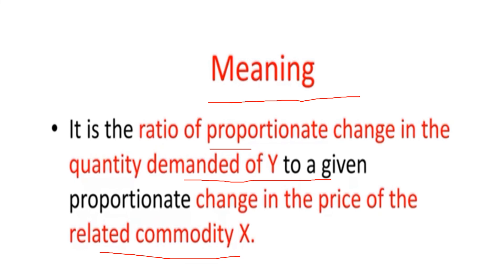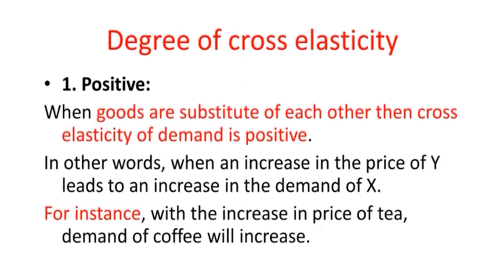If the price of tea increases, we switch to coffee — the demand for tea decreases and the demand for coffee increases. The first degree is positive cross elasticity: when goods are substitutes, the cross elasticity is positive. When an increase in the price of one good leads to an increase in demand for the other — for example, tea and coffee.